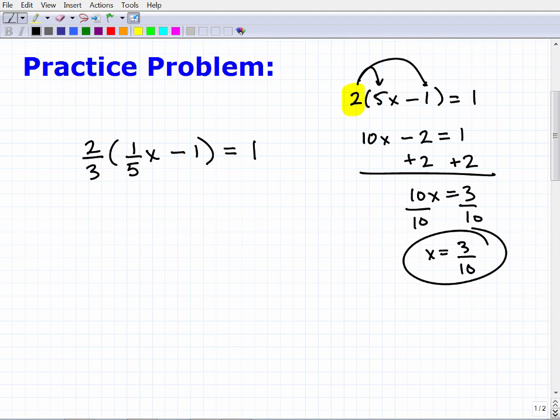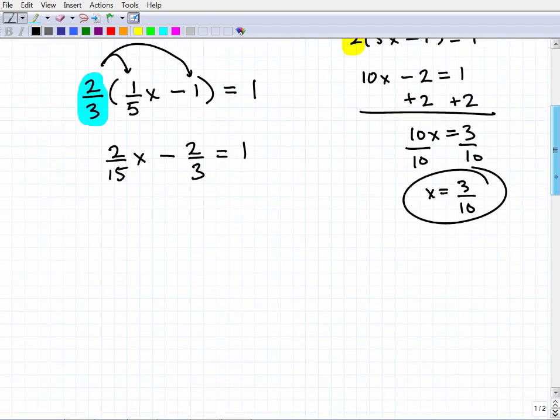Let's go ahead and get into it now. I'm gonna take 2/3 and multiply it by 1/5 x, and this 2/3 multiply it by 1. So how do you multiply fractions? We multiply the numerators and the denominators. This is going to be 2 over 15 x minus 2/3 equals 1.